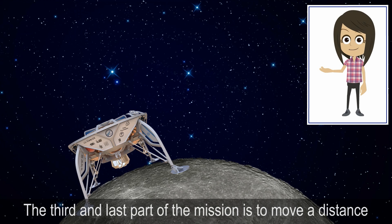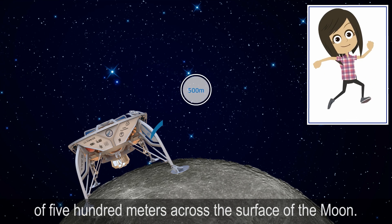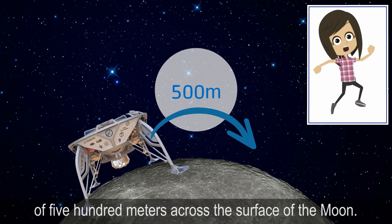The third and last part of the mission is to move a distance of 500 meters across the surface of the moon.